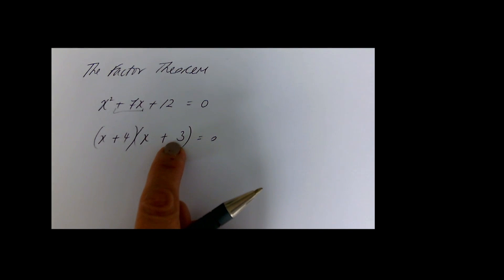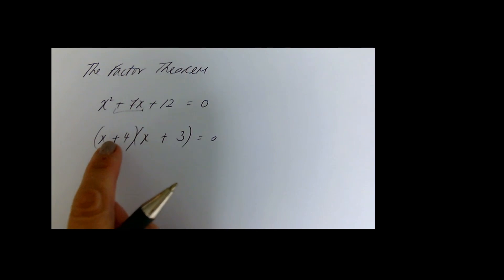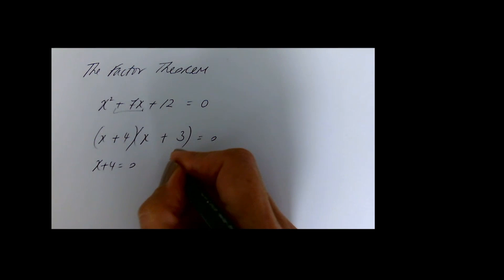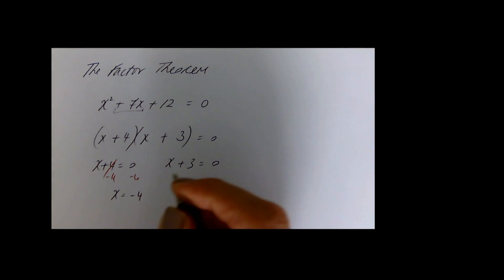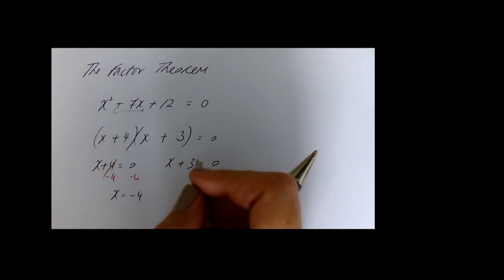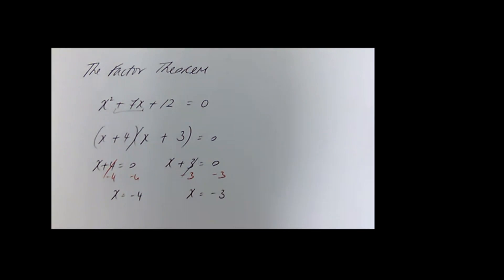So it's now factorized: x plus 4 is a factor and x plus 3 is a factor. To solve, I have two things that multiply to make 0, so either x plus 4 equals 0 or x plus 3 equals 0. That means x equals minus 4 or x equals minus 3.